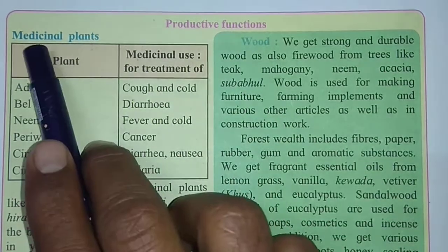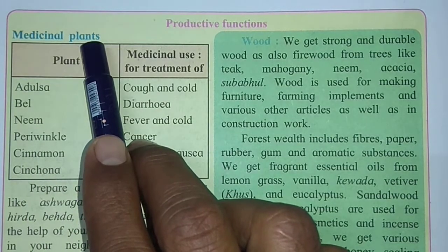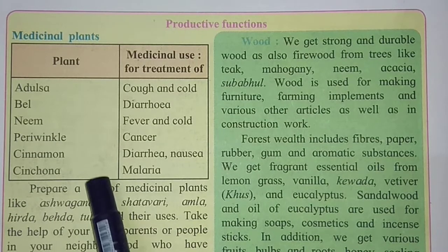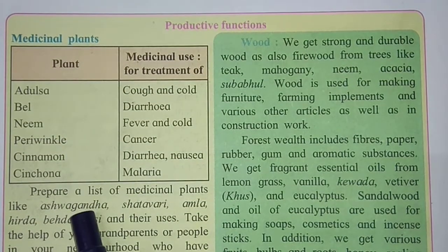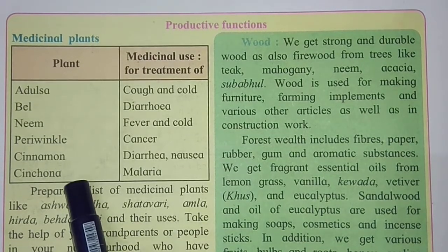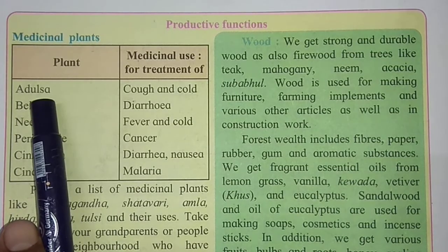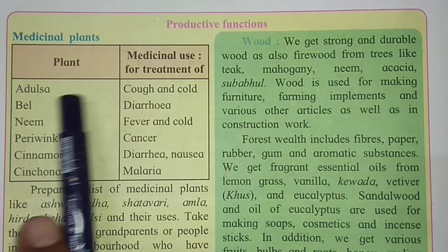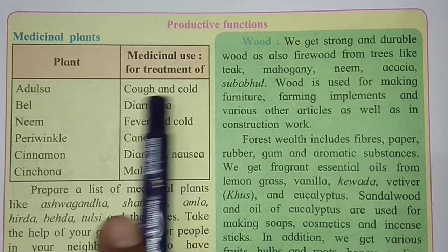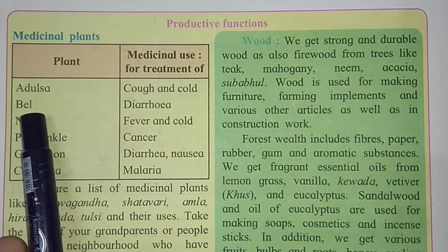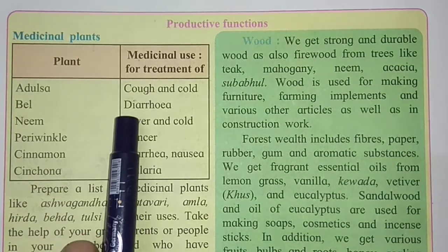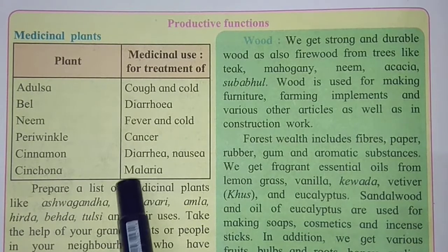The first productive function is that we obtain medicinal plants from forests. Many medicines are made from them. The plants include Adusa, Bel, Neem, Periwinkle, Cinnamon, and Cinchona. Adusa is used for cough and cold — doctors often recommend Adusa syrup. Bel is useful for diarrhea — if there is loose motion, Bel juice is very helpful. Neem is useful for fever and cold — Neem leaves and their juice are very beneficial for fever.